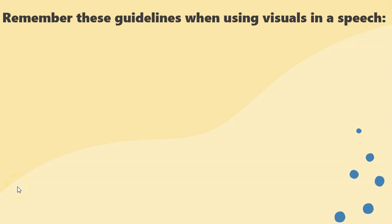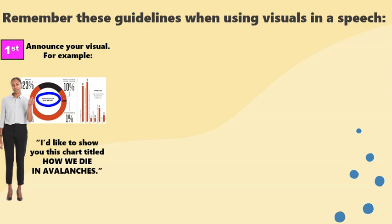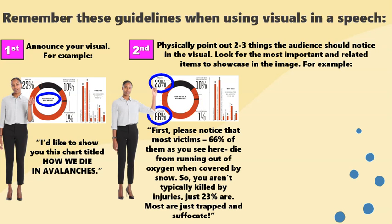Let's take a moment and review the guidelines for when you're using visuals during your speech. First, announce your visual — for example, say: I'd like to show you this chart titled How We Die in Avalanches. Second, physically point out two to three things the audience should notice in the visual, looking for the most important and related items. For example: first, please notice that most victims — 66% of them as you see here — die from running out of oxygen when covered by snow. So you aren't typically killed by injuries; just 23% are. Most are just trapped and suffocate.